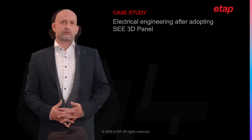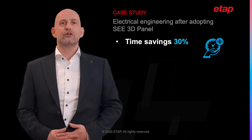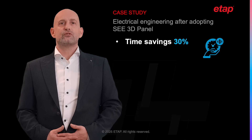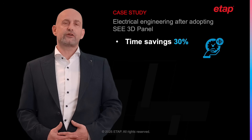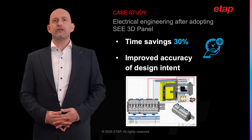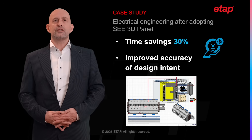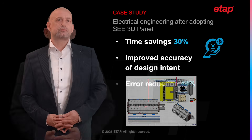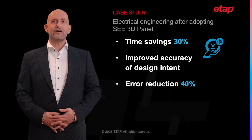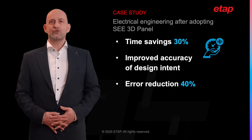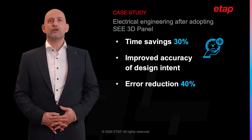After adopting C3D Panel, they achieved the following results. On time savings, the company reduced the time required to complete engineering designs by 30%, enabling them to take on more projects and increase their overall productivity. On improved visualisation, the 3D models and simulation provided by C3D Panel helped engineers and production teams better understand the design intent, leading to more accurate and efficient assembly processes. On error reduction, by detecting and addressing errors early in the design process, they reduced the error rate by 40%, reducing the need for rework and contributing to higher quality outcomes.